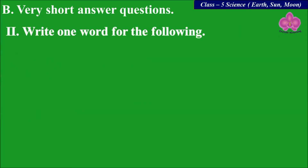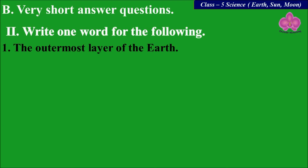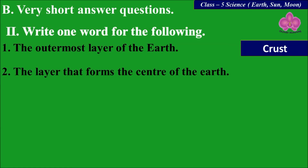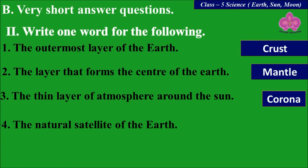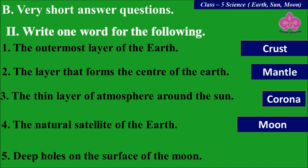Next: write one word for the following. The outermost layer of the Earth — Crust. The layer that forms the center of the Earth — Mantle. The thin layer of atmosphere around the Sun — Corona. The natural satellite of the Earth — Moon. Deep holes on the surface of the Moon — Crater.